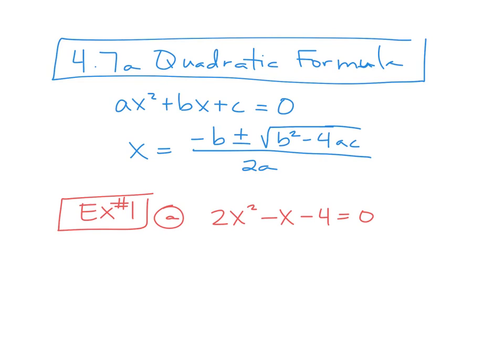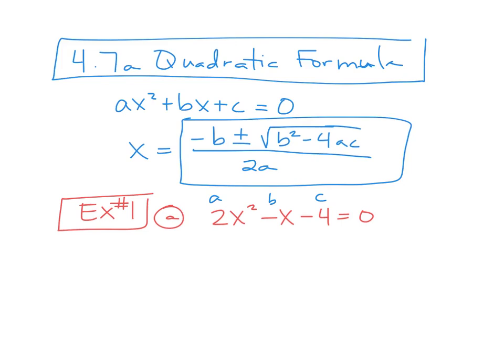In this setup, this is your a. What's your b right now? Negative one. And your c. So we're going to plug it in. x equals negative b — now be careful, because negative negative one is positive one. So negative b right now is one, plus or minus the square root.